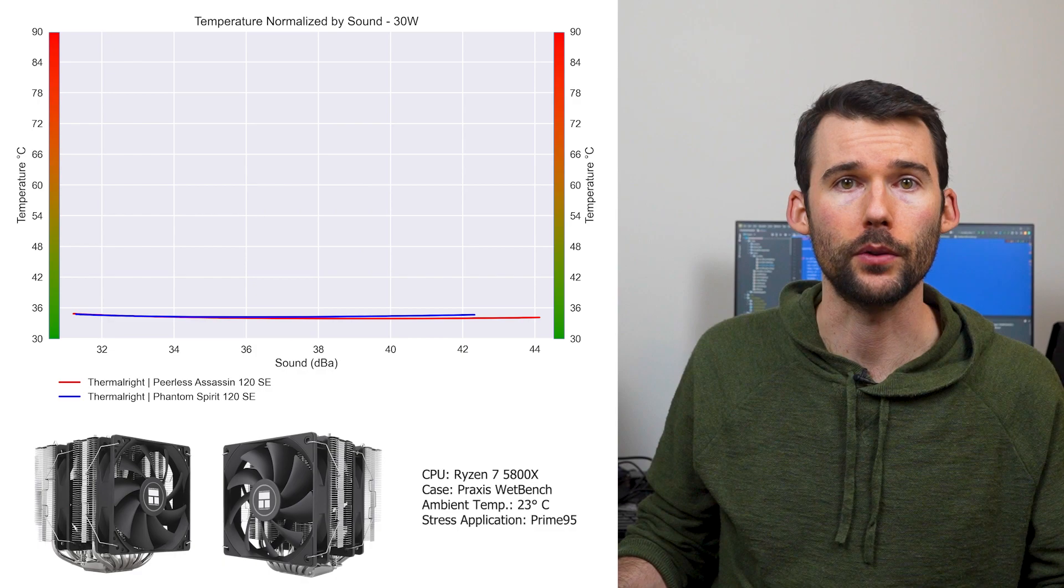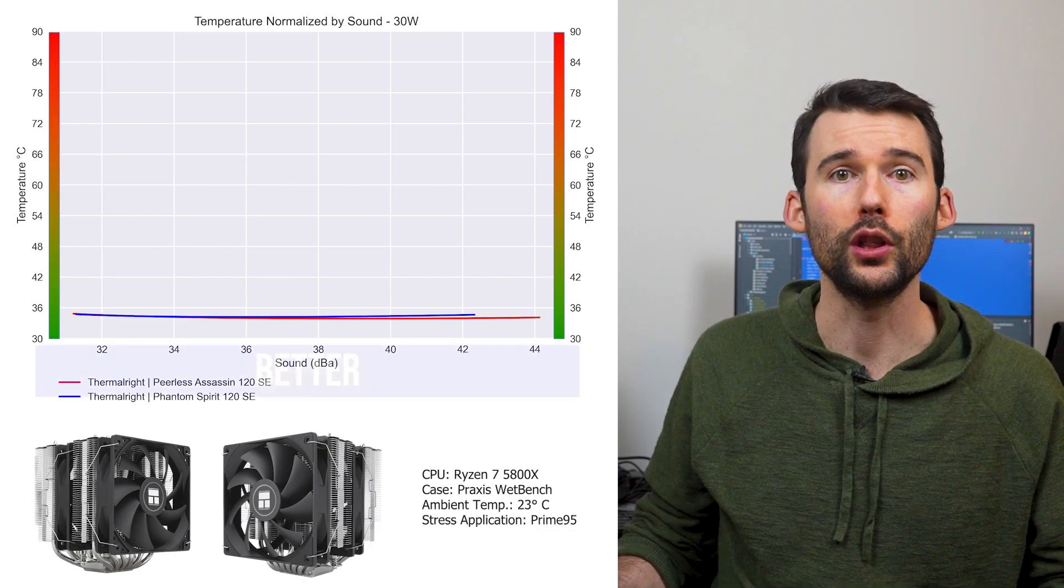In our second set of charts normalized by sound, we have temperatures on the left, noise on the bottom, with lower being better.